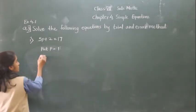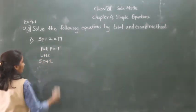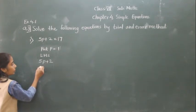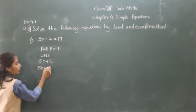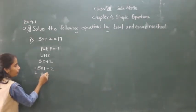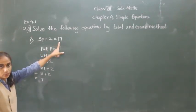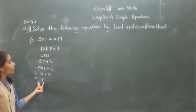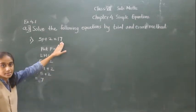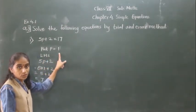We solve the LHS: 5P plus 2. Put P equal to 1, so 5 into 1 plus 2 equals 5 plus 2 equals 7. Now what is our RHS? It is 7. LHS equals 7, RHS equals 7. So P equal to 1 is a solution of the given equation.